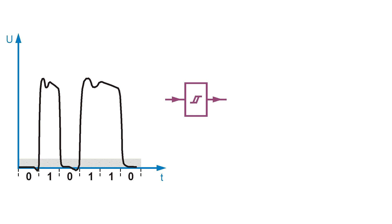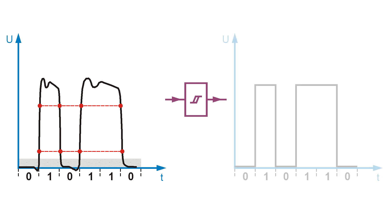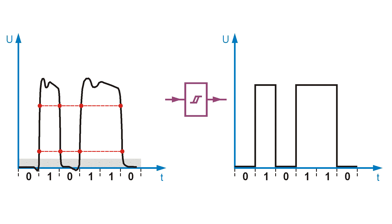If the received signal is fed into a so-called comparator, it interprets everything below a certain threshold as 0, and everything above an upper threshold as 1, and switches its output accordingly. So again, a clean rectangular signal appears. Disturbing influences on the transmission are basically eliminated. For the same reason, a digital signal can be copied easily without any quality loss.